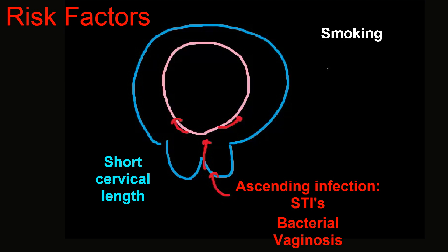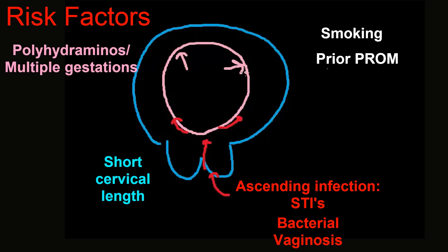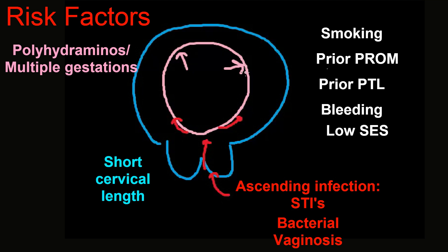Other risk factors include a history of prior PROM, polyhydramnios, and multiple gestations, which will basically distend the chorioamniotic membranes. Other risk factors are similar to risk factors for preterm delivery, including a prior preterm delivery, bleeding during pregnancy, low socioeconomic status, and low body mass index.